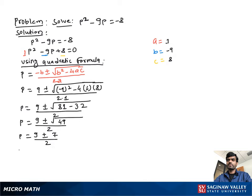split this into two parts: p = (9 + 7) over 2, or p = (9 - 7) over 2.